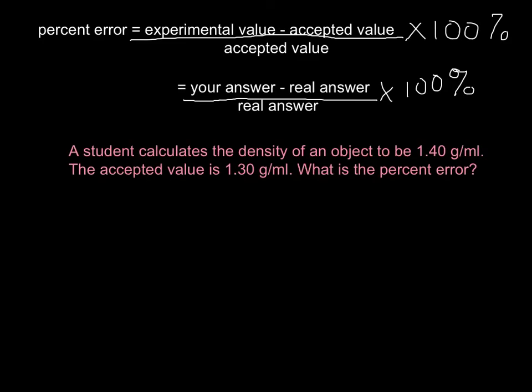Welcome to this short explainer on calculating percent error. To calculate percent error, we're going to take the experimental value minus the accepted value, and then divide by the accepted value. Then we're going to times that all by 100% in order to change our decimal to a percent.